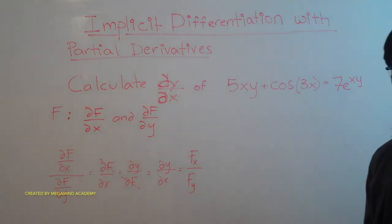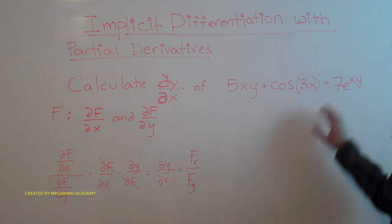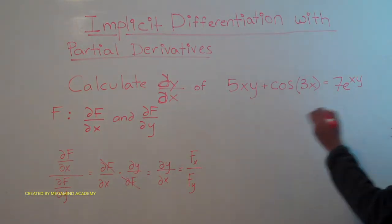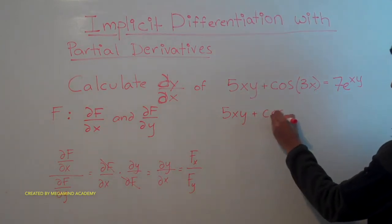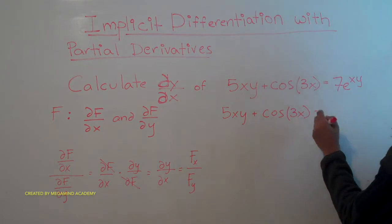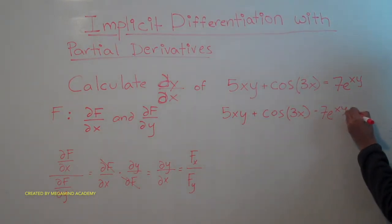So the first thing that we have to do is we have to move everything over to one side, because we don't want equal signs in our partial derivatives. So if we move it over to one side, we're going to get 5xy plus cosine of 3x minus 7e to the xy power equals 0.